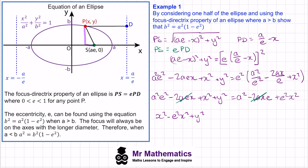We factor out x squared on the left and a squared on the right, giving x squared times (1 minus e squared) plus y squared equals a squared times (1 minus e squared). Since the right-hand side of the ellipse equation equals 1, we divide both sides by a squared times (1 minus e squared).